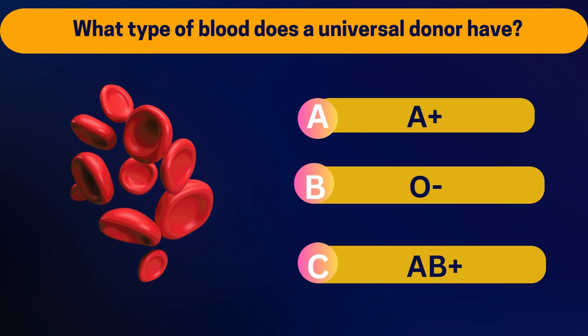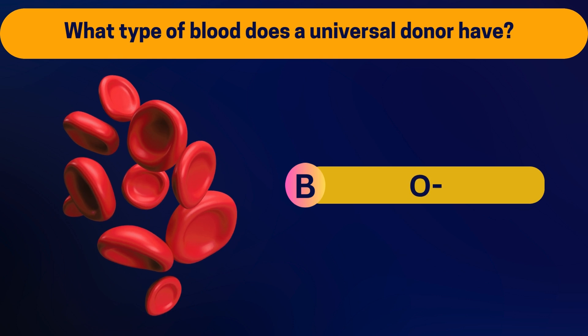What type of blood does a universal donor have? A positive, O negative, or AB positive? O negative.